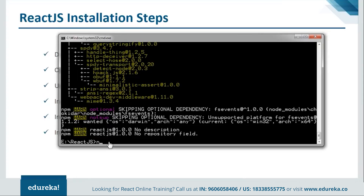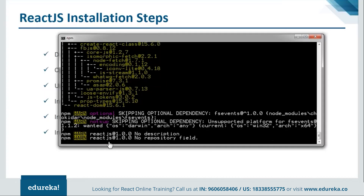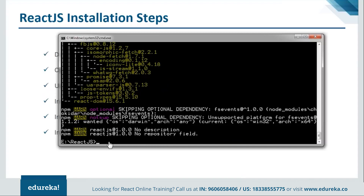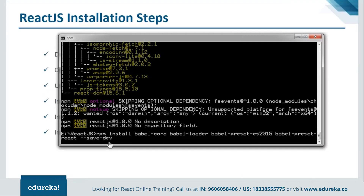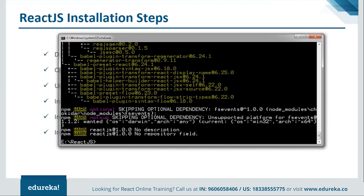Now we have to install React. We'll type npm install react along with react-dom and --save. Once that's done, we'll move on and install Babel. After running the install command, let it get installed. Once done, we are done with all our modules and are good to go with our coding.